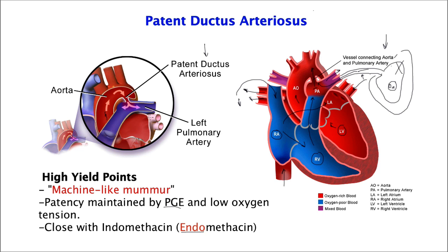Another congenital cardiac association to know about PDA is that it is often found in patients with congenital rubella. So if a question presents a patient with rubella who has a blueberry muffin rash on their skin, and asks what kind of cardiac defect you would most likely see, the answer is PDA — patent ductus arteriosus. And that brings us to the end of our lecture on PDA.